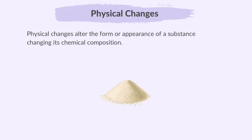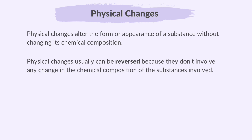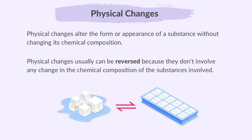In the case of mixing sand and salt, it is a physical change because both substances retain their chemical identities. They can be separated by physical methods like filtration because they haven't undergone a chemical reaction. Physical changes usually can be reversed because they don't involve any change in the chemical composition of the substances involved. For example, if you melt ice into water, you can freeze the water back into ice.